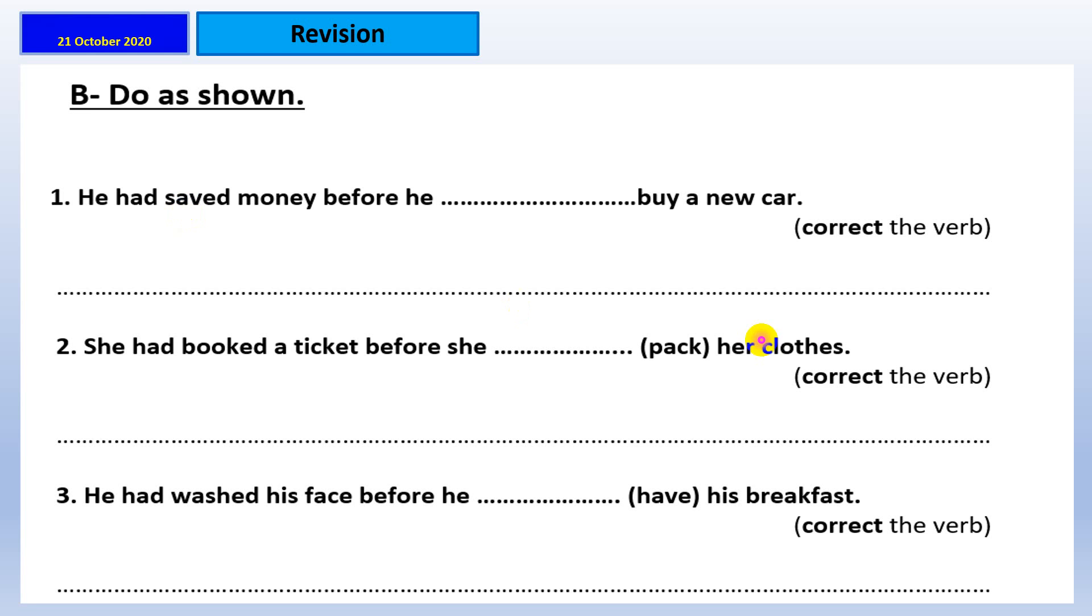Now, move on to worksheet number nine. Have a look at this one. Now, what you are going to do, you are going to correct the verb. Okay, to solve the sentence. Pause the video now, answer this one in your notebook. Now, let us check. He had saved money before he buy a new car. So, think about this sentence. How can I correct the verb? Yeah, he had saved money before he bought a new car. That's right. The second one, she had bought a jacket before she, yeah, picked clothes, picked. Okay, so we are going to use the past. He had washed his face before he had his breakfast. Done with this part?